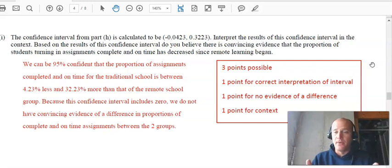All right, so the confidence interval here is provided for us. And so at this point, it might be good to mention there's a lot of people speculating that with the AP test being online and at home, they're trying to make it equitable. And so what that means is a lot of people are speculating that there will not be a whole lot of calculator use on this test, thinking that some students won't have access to a calculator. So don't be surprised. They're providing you with the confidence interval and you need to be able to interpret that. Based on the results of this confidence interval, do you believe there's convincing evidence? So we are 95% confident that the proportion of assignments completed and on time for traditional school is between four and 32%. Because this confidence interval includes zero, we do not have convincing evidence of a difference in proportions.